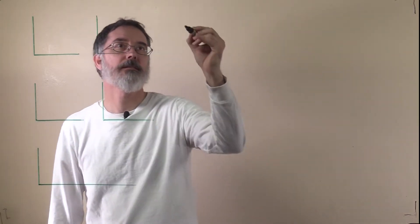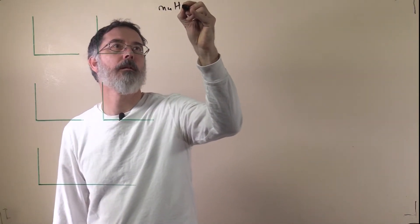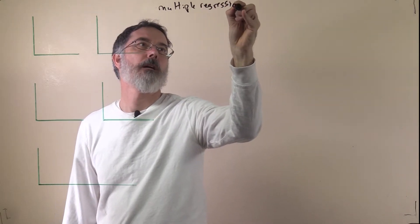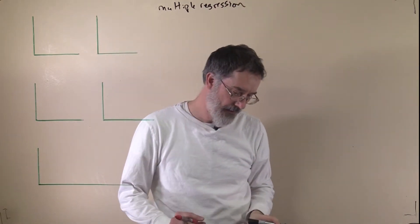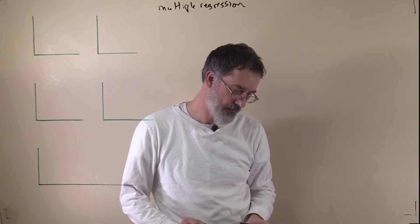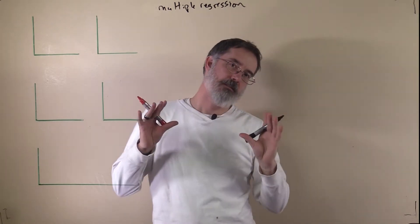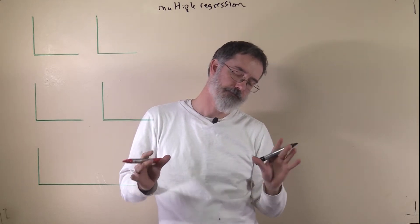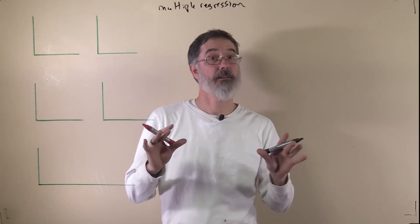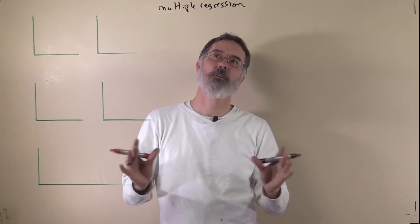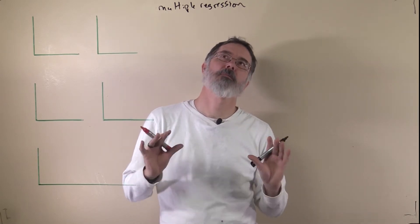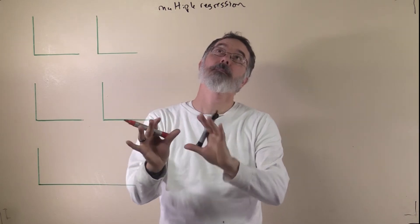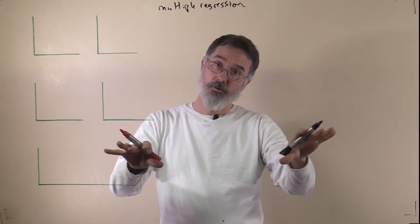Now we will go through the steps for multiple regression. For this example, we are going to be interested in whether or not the number of hours students study predicts their exam grade, controlling for their attendance. That is the overall research hypothesis. We are hoping to find that studying does predict exam grades once you control for attendance.